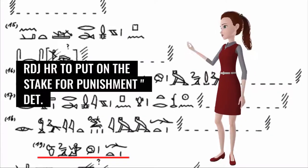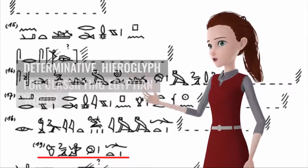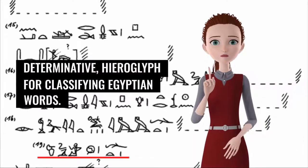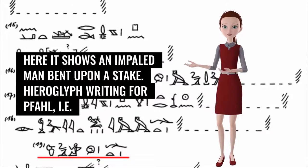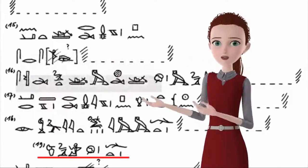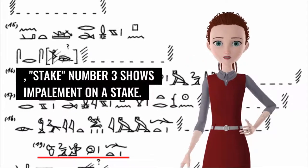RTJ: hour to put on the stake for punishment debt. The terminative hieroglyph for classifying Egyptian words. Here it shows an impaled man bent upon a stake. Hieroglyph writing for fall, i.e., stake. Number 3 shows impalement on a stake.